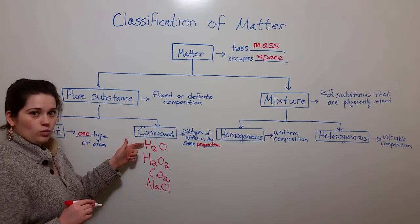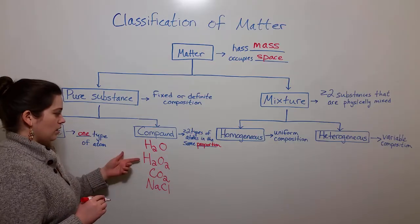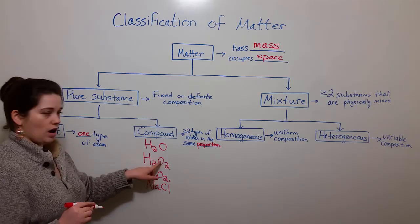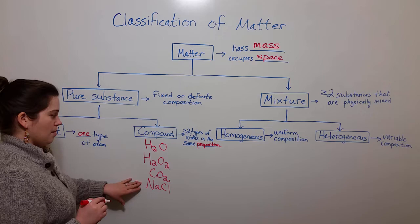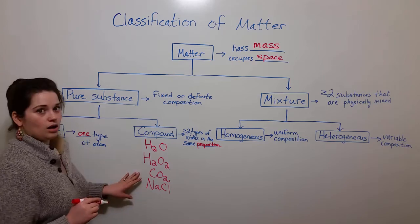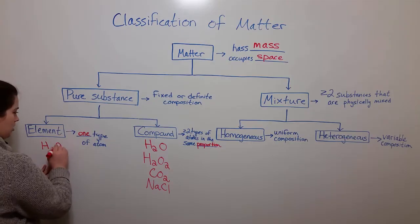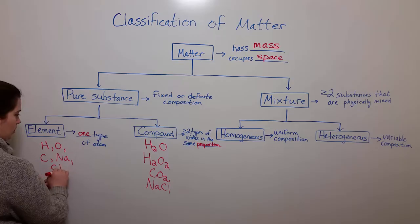That is, every single water molecule has two hydrogens and one oxygen. Every single molecule of hydrogen peroxide has two hydrogens and two oxygens. And so the components that are making up these compounds, note that these are elements. So for example, hydrogen, oxygen, carbon, sodium, chlorine, these are all elements that make up compounds.